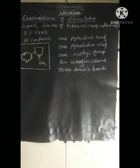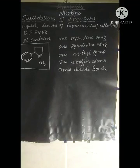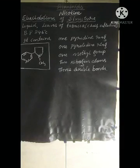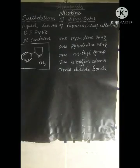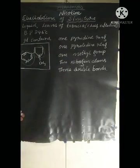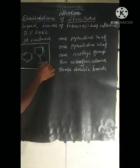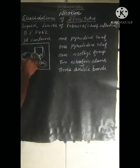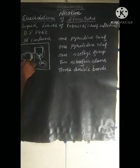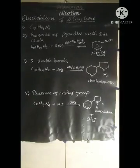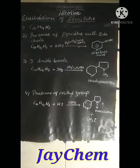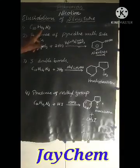The structure of nicotine contains one pyridine ring, one pyrrolidine ring, one methyl group, two nitrogen atoms, and three double bonds. Look at the structure — there is a pyridine ring, a methyl group, two nitrogen atoms, and three double bonds. From elemental analysis and molecular weight determination, the molecular formula of nicotine is C10H14N2.